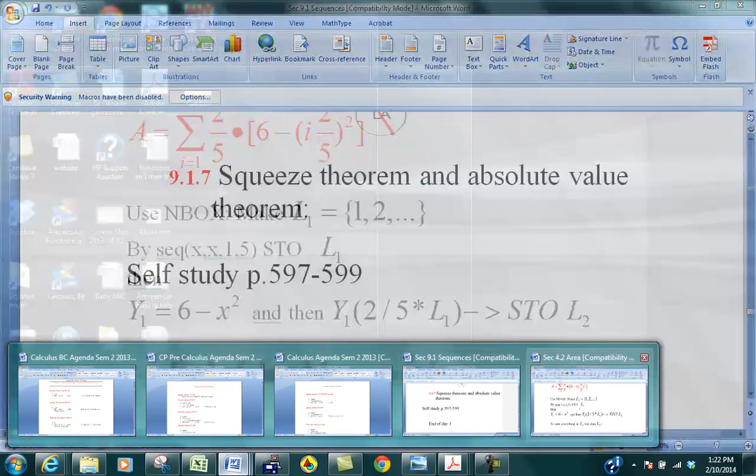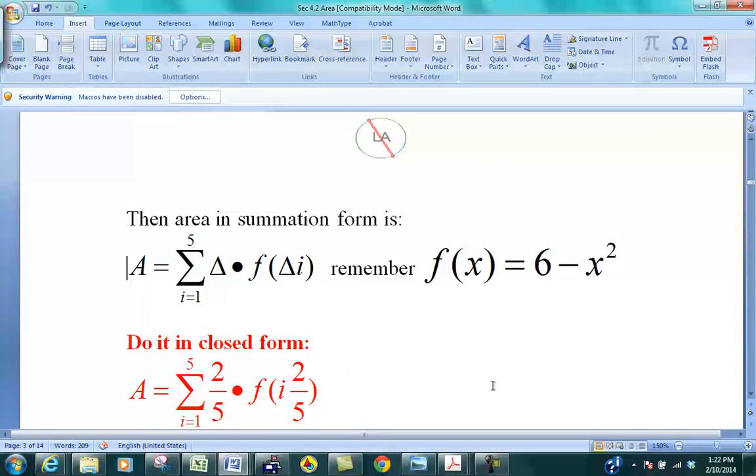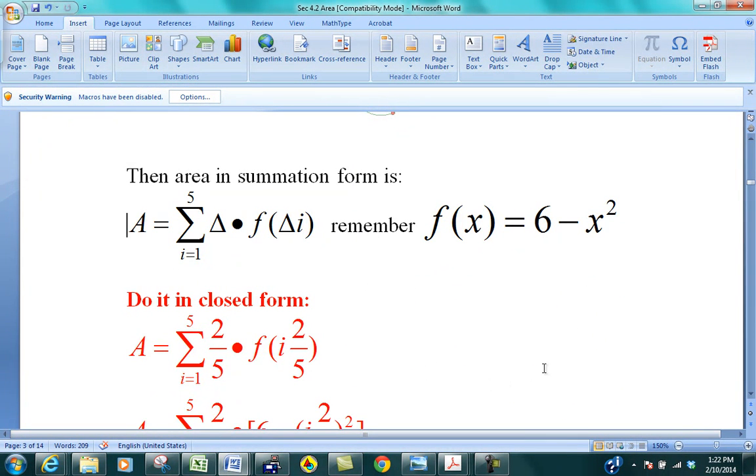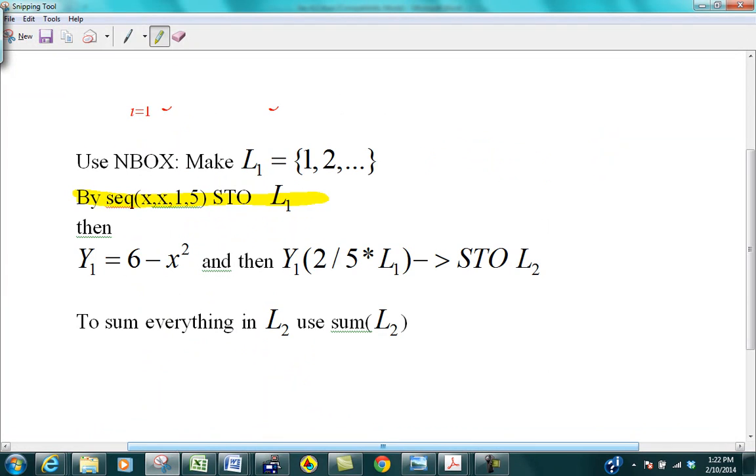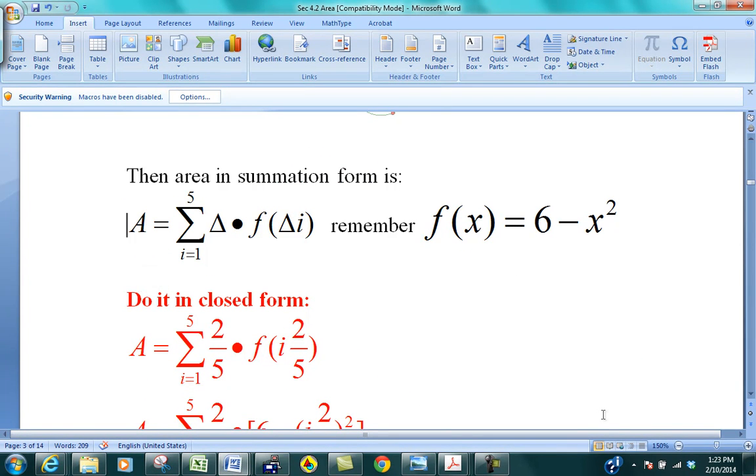If you hit enter, you see that you get 1, 2, 3, 4, 5 in there, in L1. Now let me kind of tie this back to where this comes from. Why do I want that? So if I go back to this part here, remember what I told you? That this delta I, I is going to go from 1 to 5. It's going to be 1 times 2 fifths, 2 times 2 fifths, 3 times 2 fifths, 4 times 2 fifths, and 5 times 2 fifths. So in other words, I want the sequence 1, 2, 3, 4, 5. Is everybody with me on that?